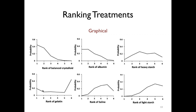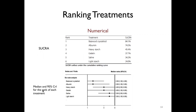This graphic represents the ranking of resuscitation fluids in patients with sepsis for the outcome of mortality. We can see that balanced crystalloids have the highest likelihood of being ranked first, followed by albumin, gelatin, and heavy starch. For the second rank, balanced crystalloids and albumin still appear most likely, while saline and light starch are less likely, but heavy starch now has a higher likelihood than gelatin. Looking across these figures, you can make an intuitive estimate of the rankings and the gradient represents the effect across treatments.